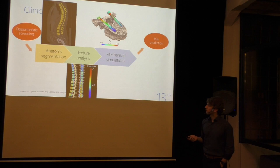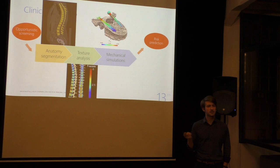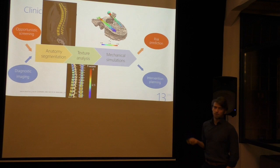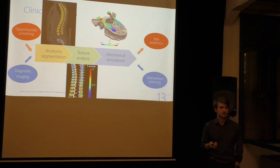We can also use the same pipeline when we know that a patient already has an osteoporotic fracture and needs surgery. We do a diagnostic image of the patient and can plan the right intervention. For example, if the bone mineral density is too low, using screws is not a good idea because they can't hold inside the vertebra, and we need to use something else.